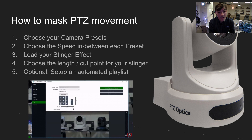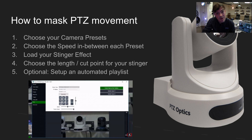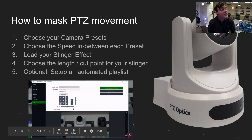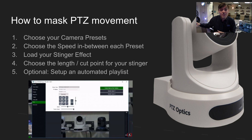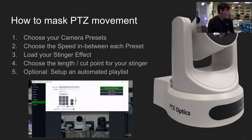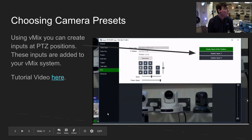Step three: load up a stinger — a blank image sequence that acts as a placeholder so you can choose exactly how much time passes before switching to the next camera, effectively masking the pan tilt and zoom. Step four: choose the length of the cut point, whether you want to mask all of the PTZ movement or just a portion for a nice easing-in effect. Step five, optionally: set up an automated playlist, which is great if you're a solo operator both on-screen and running production.